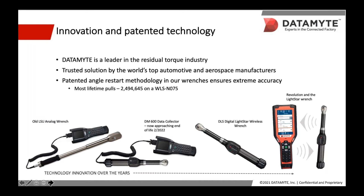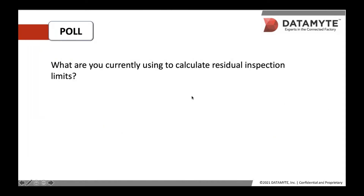Before I turn the presentation over to Pete, I'm going to launch a quick poll. The question is: what are you currently using to calculate residual inspection limits?